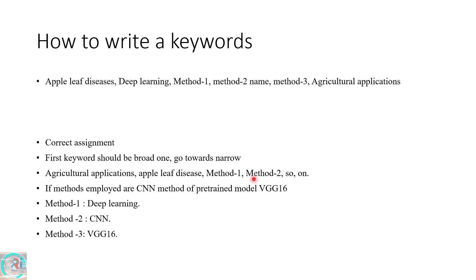I would suggest at least five keywords to help attract authors to read your paper. To summarize: the first keyword should be the broader one - agricultural application. Within that, what you are concentrating on is apple leaf. How you are going to detect it is by using deep learning. Deep learning methods - you are detecting using VGG16, which is a subset of CNN, which comes under deep learning.